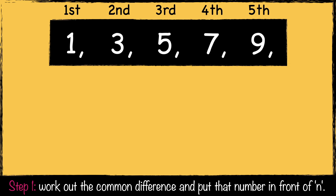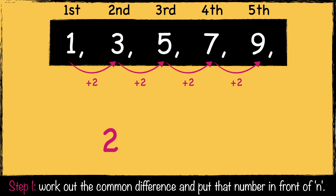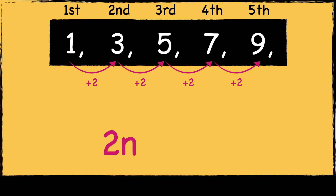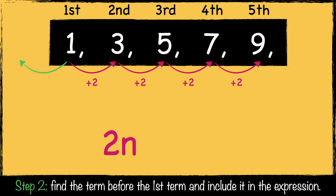Here's the next sequence: 1, 3, 5, 7, and 9. First, we need to work out the common difference. In this sequence, we're adding 2 to each number, so the first part of the expression is 2n. As this sequence is adding 2 each time, we need to subtract 2 to find the previous term. So 1 take away 2 is minus 1. So the nth term expression for this sequence is 2n minus 1.